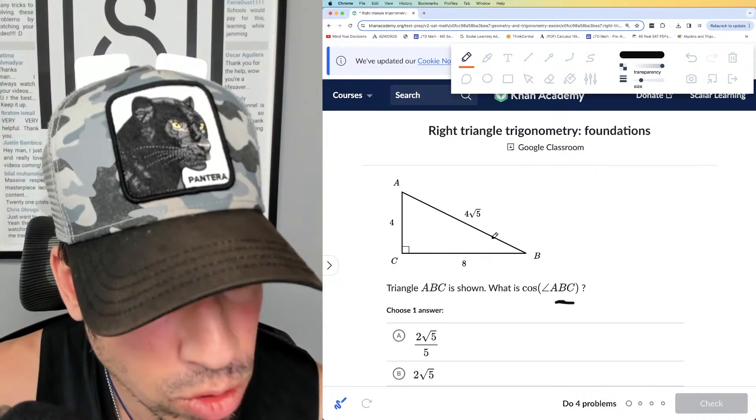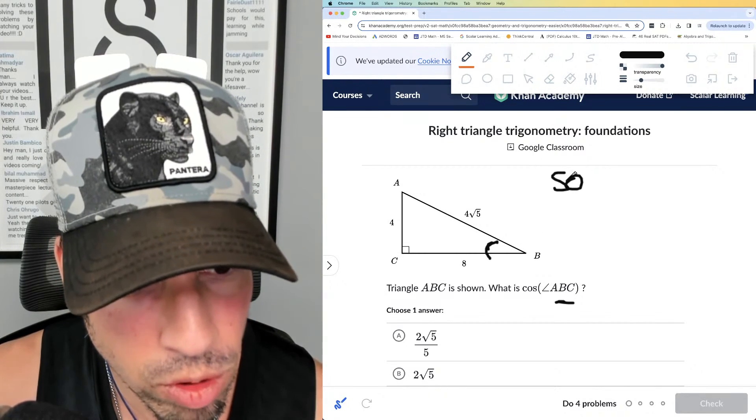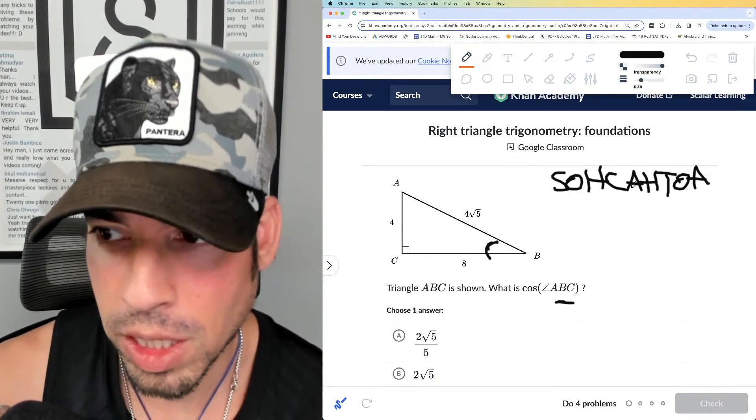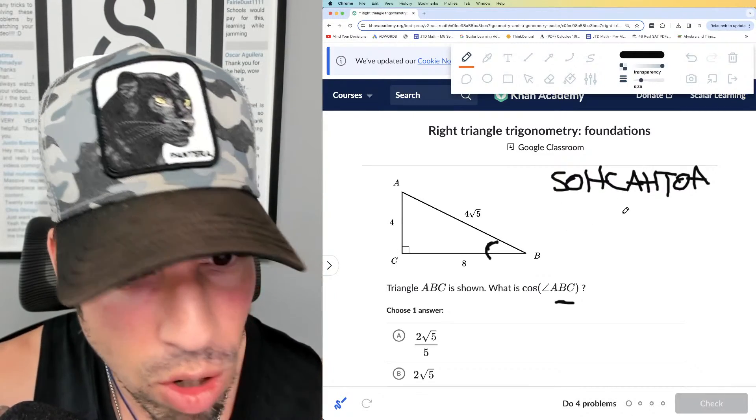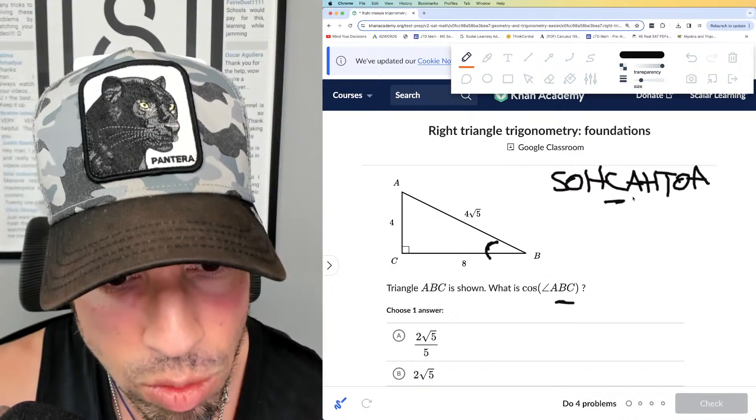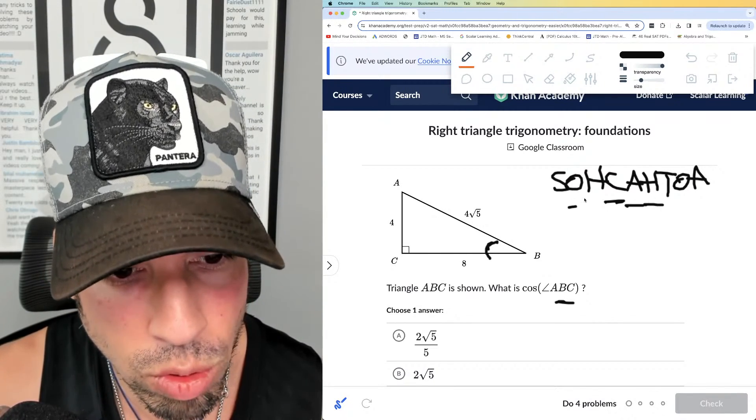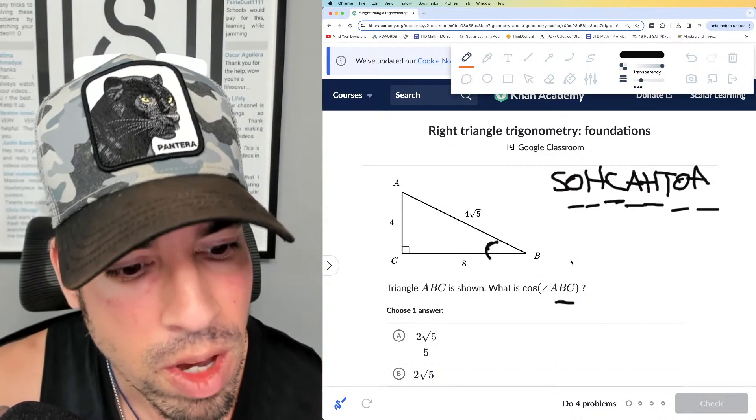Okay, so what is cosine? We remember SOHCAHTOA, our trigonometry little mnemonic device. And cosine is cosine equals adjacent over hypotenuse, sine is equal to opposite over hypotenuse, tangent is equal to opposite over adjacent. So what does that mean?